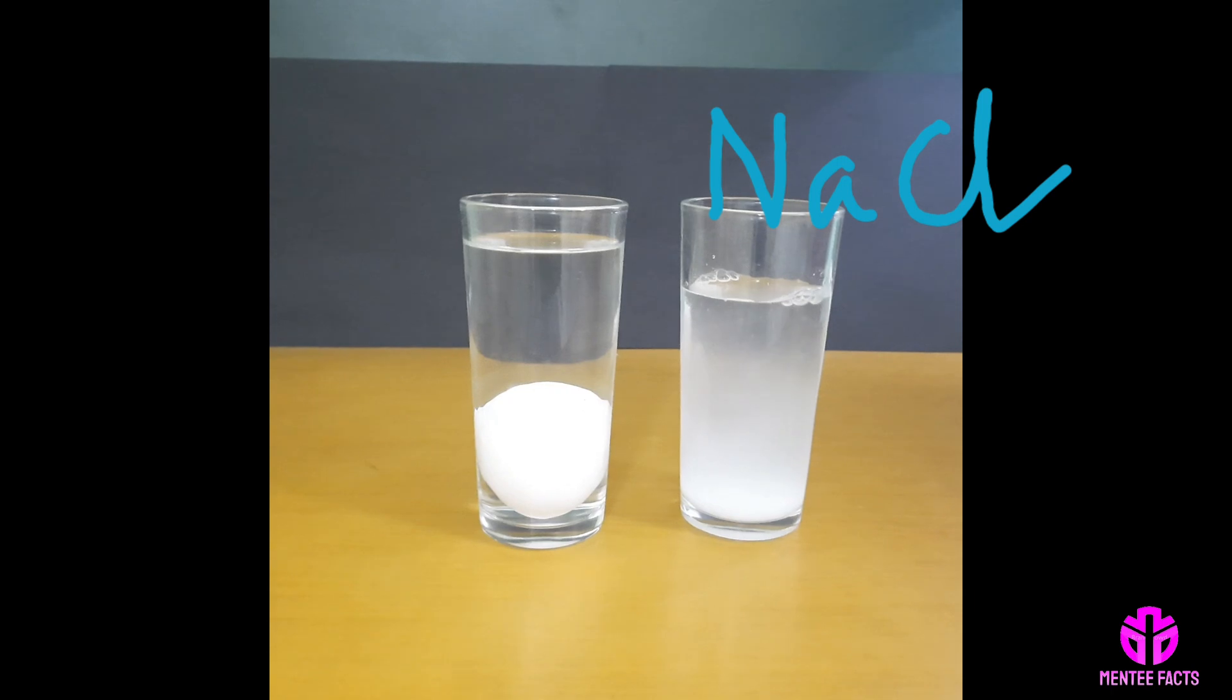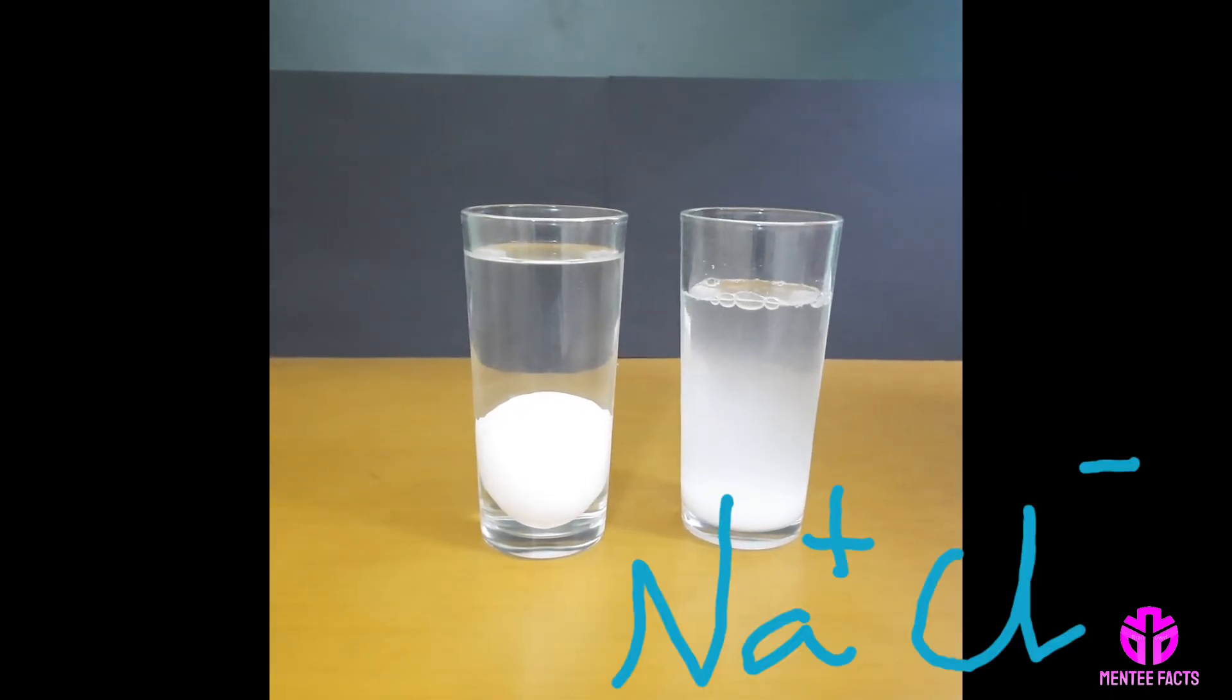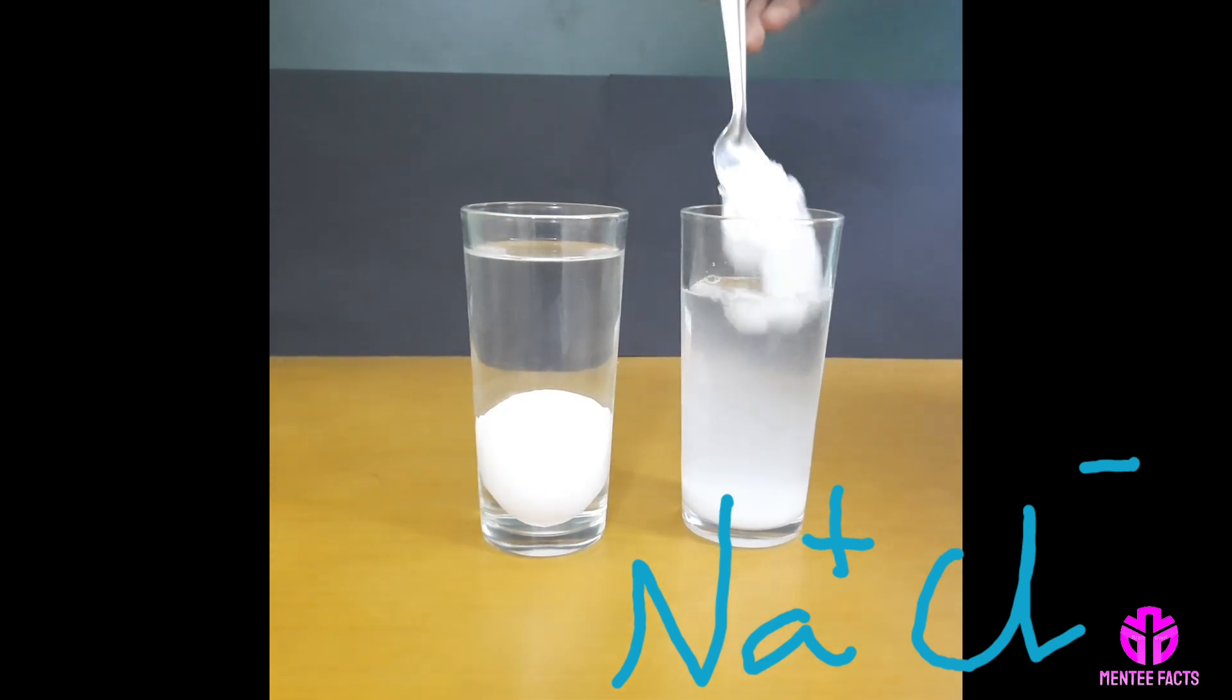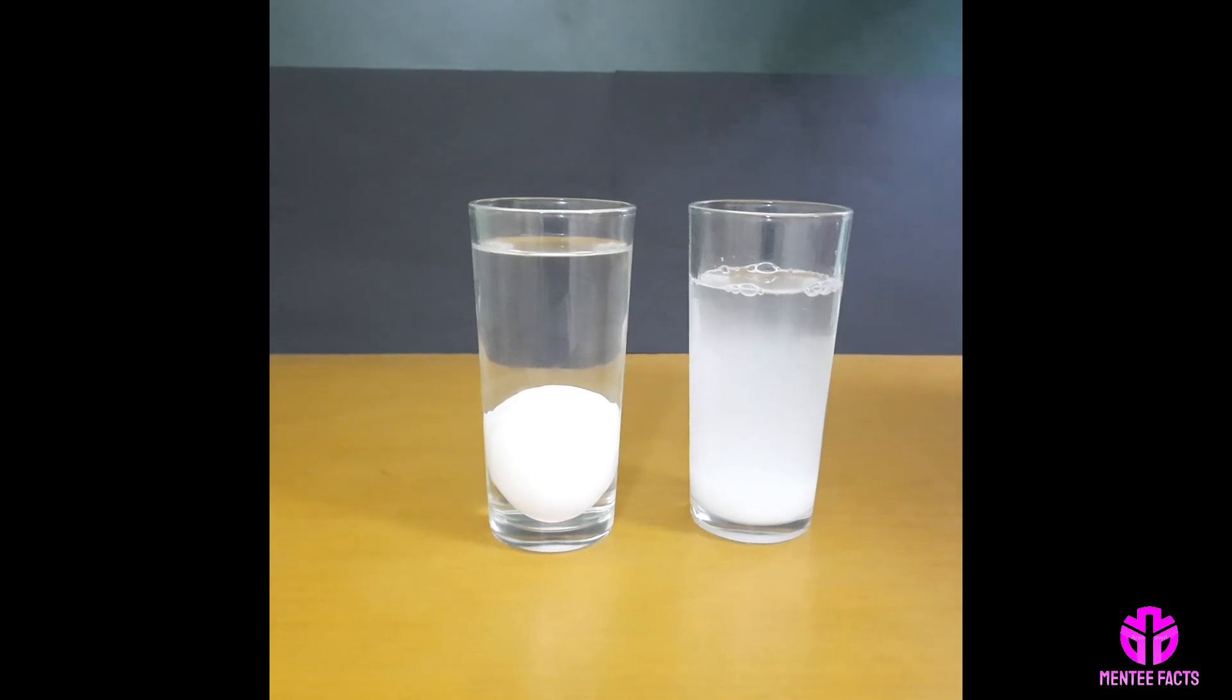Add enough salt, NaCl, to the water. Sodium and chloride ions are formed, so the egg floats back up to the surface.